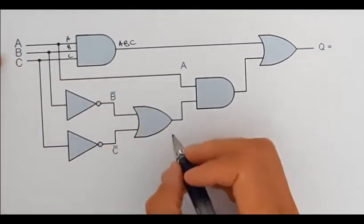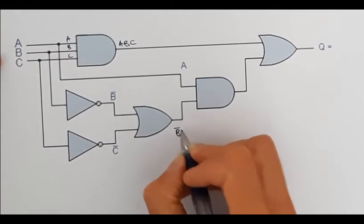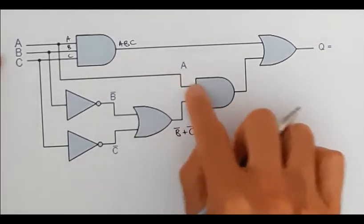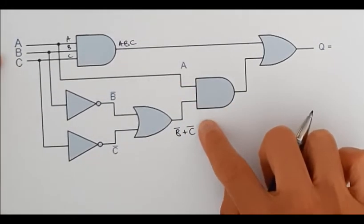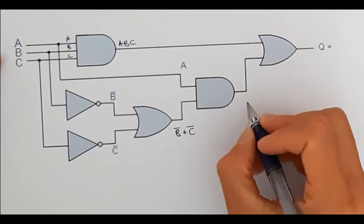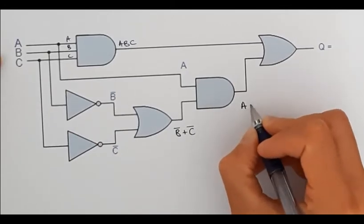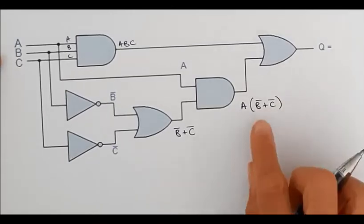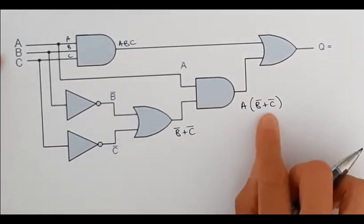So let's take this OR gate. Here I've got NOT B ORed with a NOT C. Here I've got an A coming in and I've got this expression coming in as well into an AND gate. So I'm going to have A AND (NOT B OR NOT C).